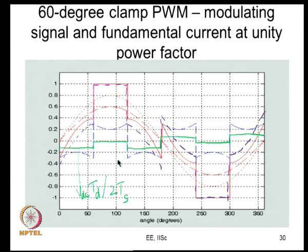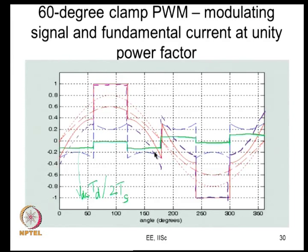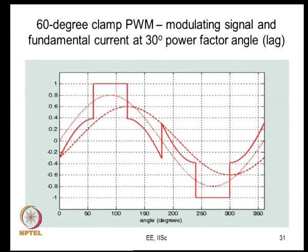Let us look at the next example: the same 60-degree clamp PWM but at 30-degree power factor angle. The current direction is negative up to a certain point, so the error voltage is positive there. Then the current changes direction, making the error voltage negative (= -Vr). During the clamped region the error is 0. The value is still Vdc × Td / (2Ts), but the waveshape is different.